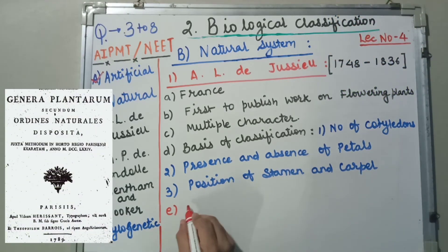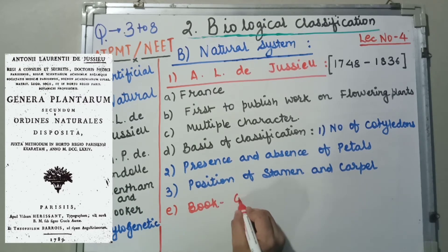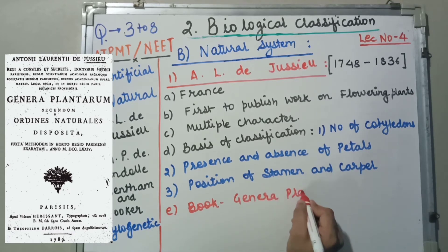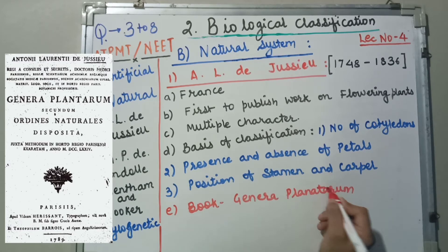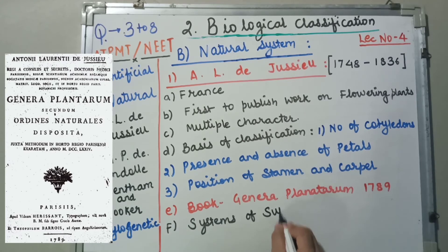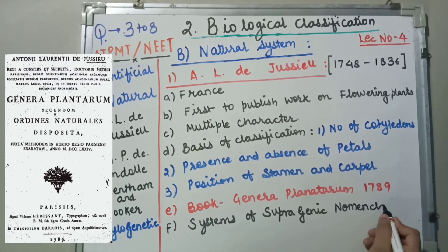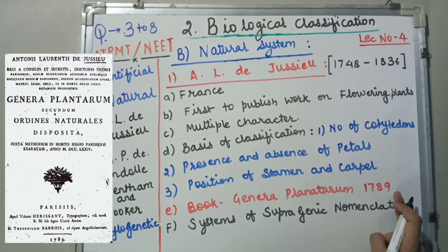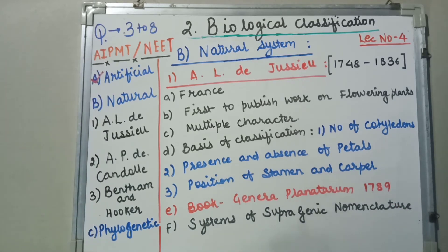Jussieu has written a book which is known as Genera Plantarum. He has mentioned about systems of supragenic nomenclature, which was published in 1789. Supragenic nomenclature was given by ALD Jussieu.